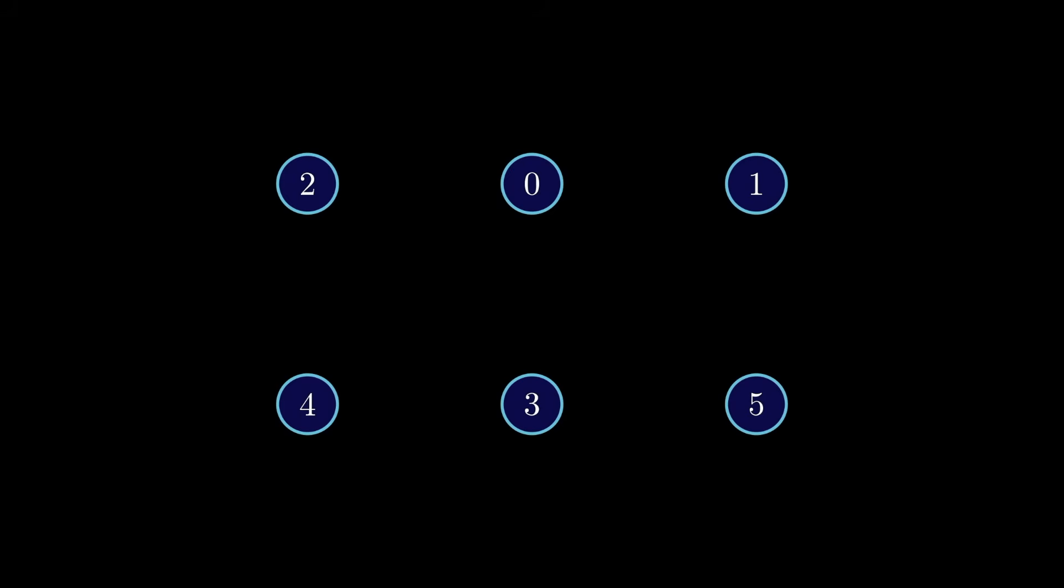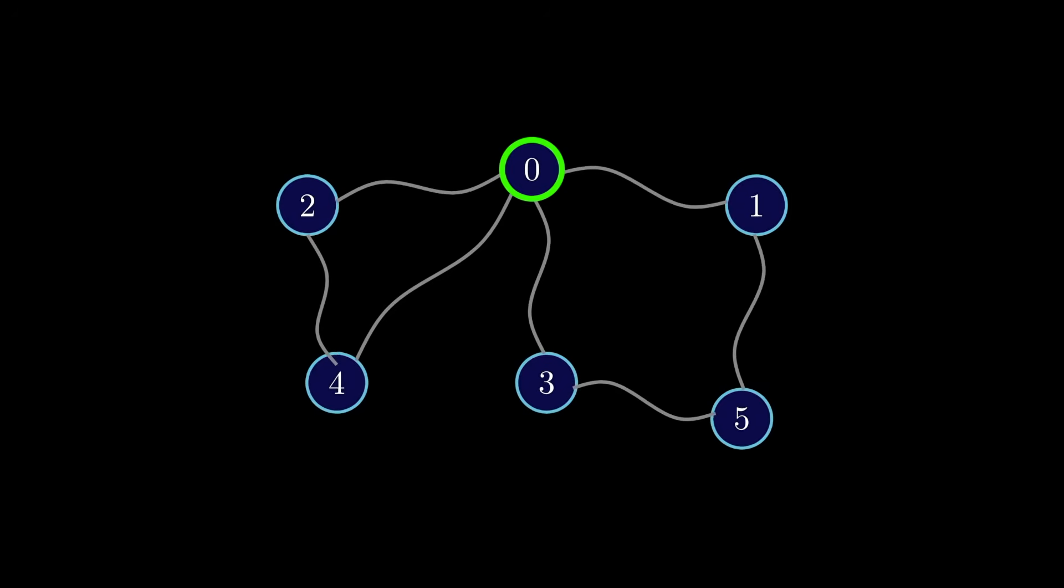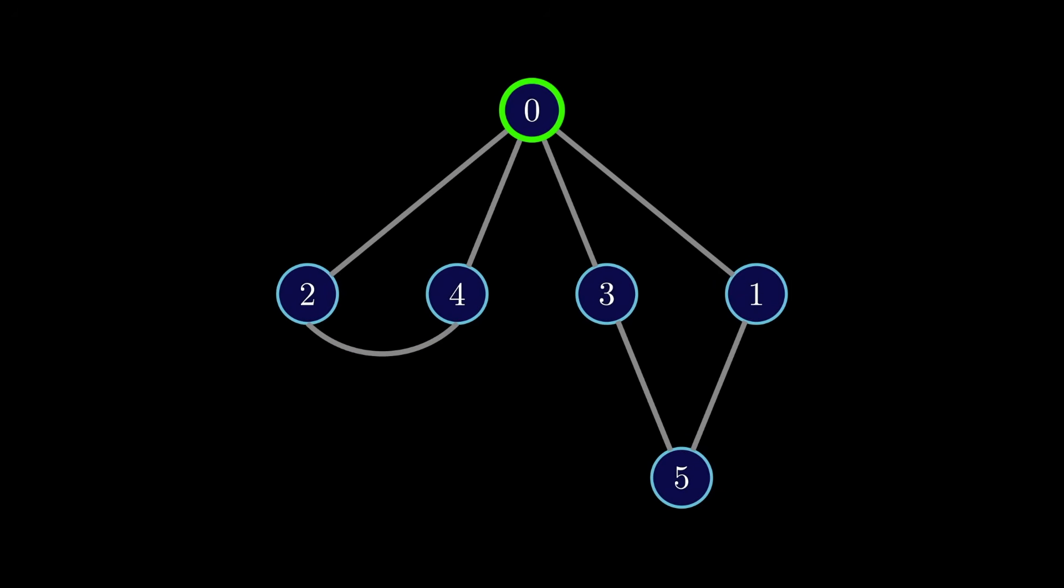One of my favorite ways to think about breadth first search is through the following analogy. Imagine a graph like this one represents balls with strings attached to them. Suppose you want to start a traversal of the graph from vertex 0. What you can do is imagine pulling the ball that represents vertex 0 up until all the strings tighten.